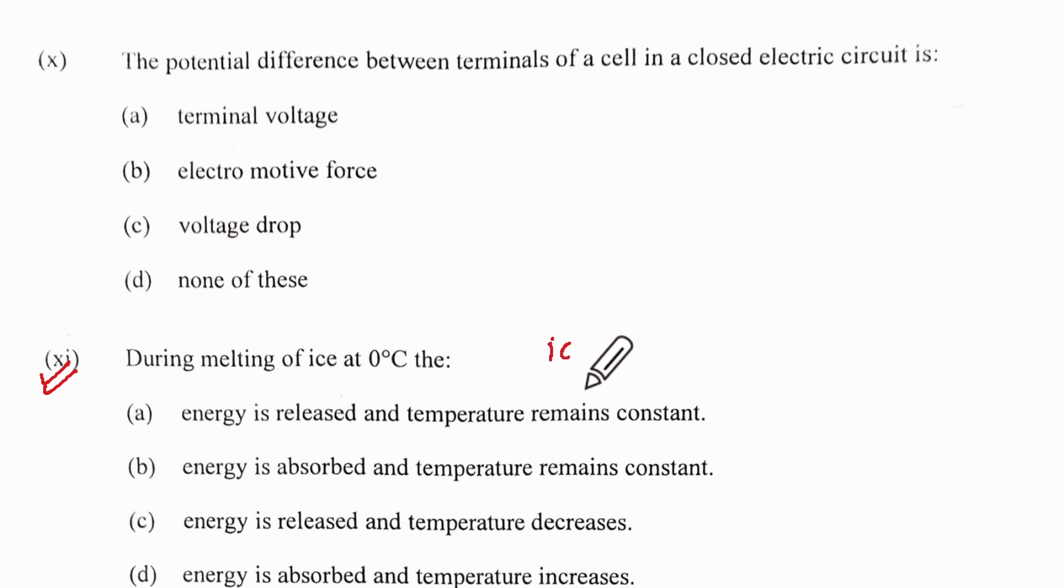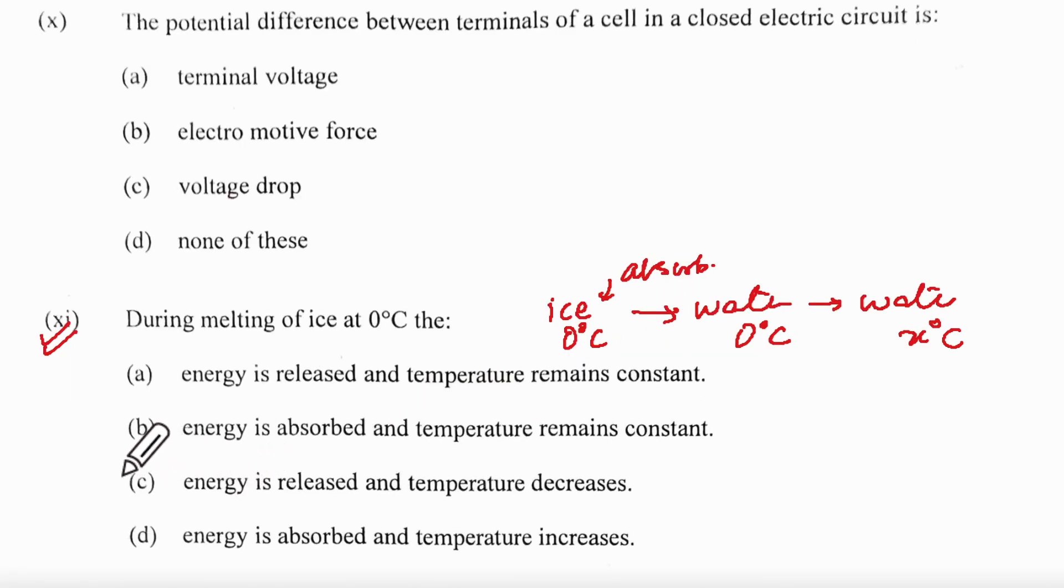The 11th one seems to be a little tricky. Melting of ice at 0 degrees: we have ice at 0 degrees becomes water at 0 degrees first, and then it will be water at higher temperature, x degrees C. Ice is going to absorb heat. Definitely ice is not going to release heat. So energy absorbed, and energy absorbed - out of these two you have to select.